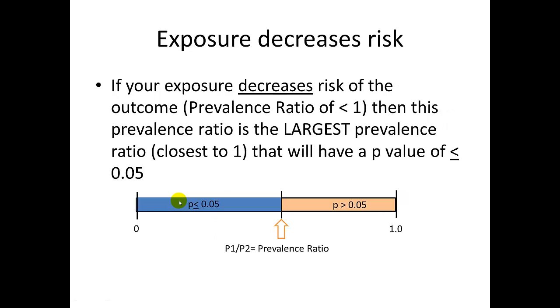If your exposure decreases risk of the outcome, it would have a prevalence ratio of less than 1. Then it's the largest prevalence ratio that would have a p value of less than or equal to 0.05. Any prevalence ratio closer to 1 would have a p value of greater than 0.05 and would not be considered statistically significant.